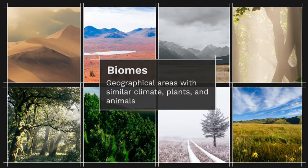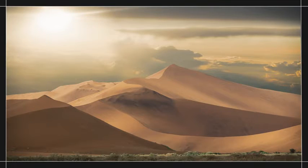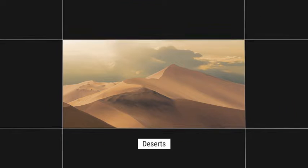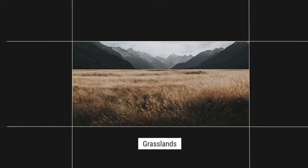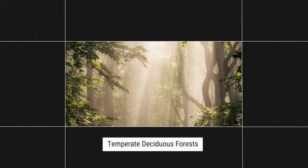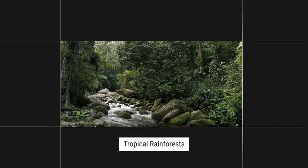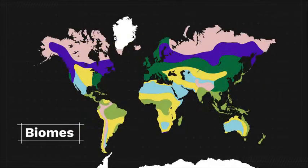Biomes are geographical areas with similar climate, plants, and animals. Some of the Earth's main biomes are deserts, tundras, grasslands, temperate deciduous forests, tropical rainforests, and boreal forests. Biomes can span countries, oceans, and continents. Which is the correct organization from smallest to largest?